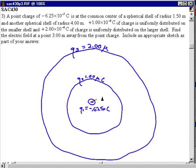This first one has a radius r1 of 1.50 meters, and the other one has a radius r2 of 4 meters.